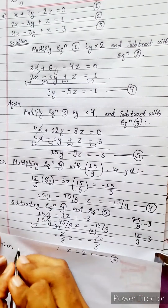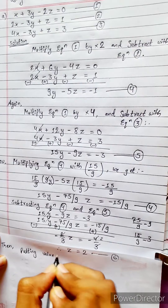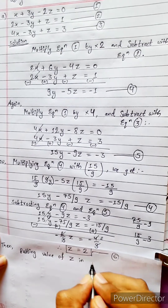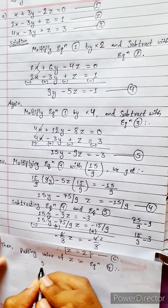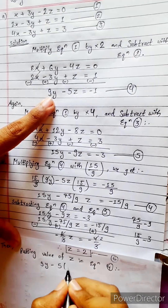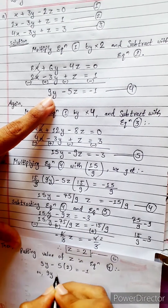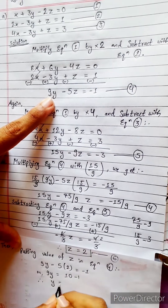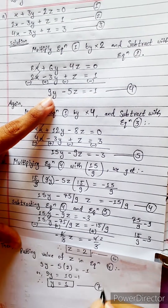Putting the value of z into equation 4: 9y - 5(2) = -1, so 9y - 10 = -1, therefore 9y = 9. Let's consider this equation 7 and solve directly for y.